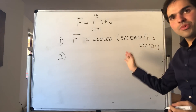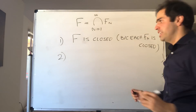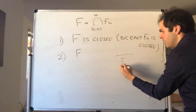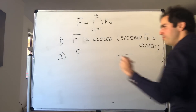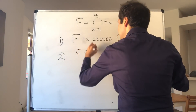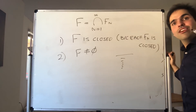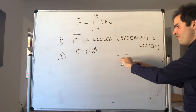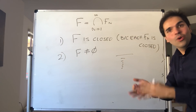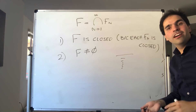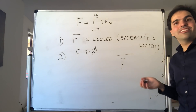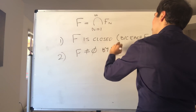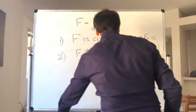Moreover, and kind of what's more interesting, is that F is not empty. It could be possible that if you take the intersection of those infinitely many sets, the intersection might be empty. But this is not true because of the finite intersection property. Notice the Fn's are decreasing, closed, and non-empty. So by the finite intersection property, the intersection is non-empty. That's a good application of the finite intersection property.